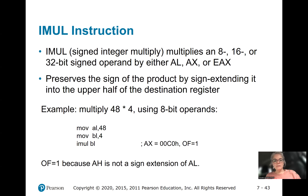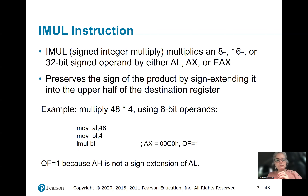We're going to use IMUL to do signed integer multiplication. It preserves the sign of the product by sign-extending it into the upper half of the destination register. For example, using 8-bit operands with positive numbers, we put 48 into AL and 4 into BL, then multiply 4 times 48. Notice the answer does not go into BL — it always goes into AX.